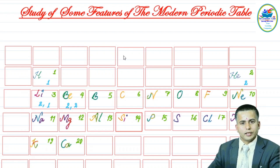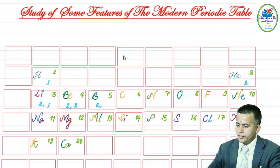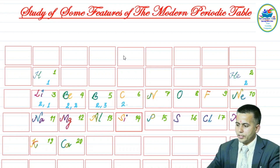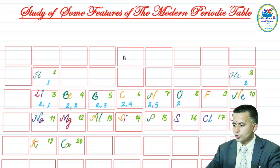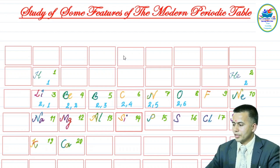Boron contains two electrons in K and three in L. Nitrogen contains two electrons in K and five in L. In the same manner, oxygen has two electrons in the K shell and six electrons in the L shell.